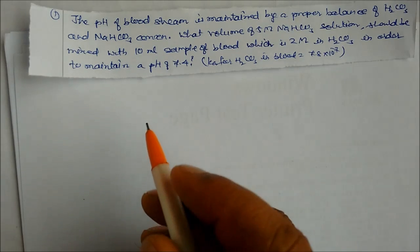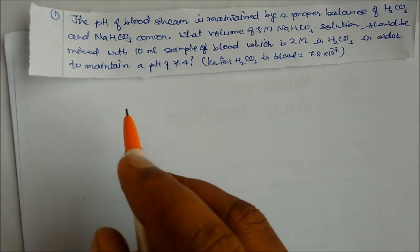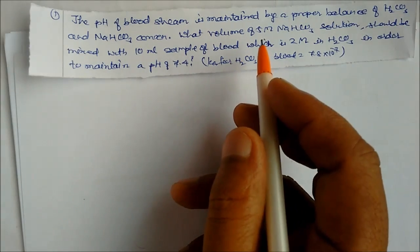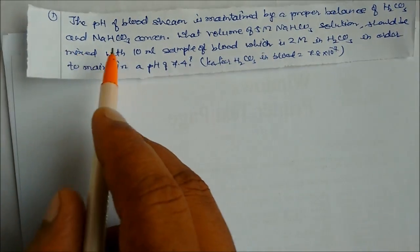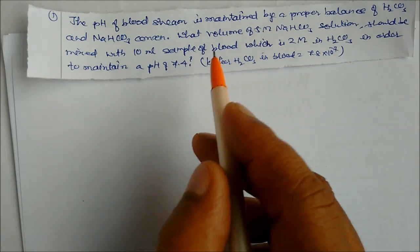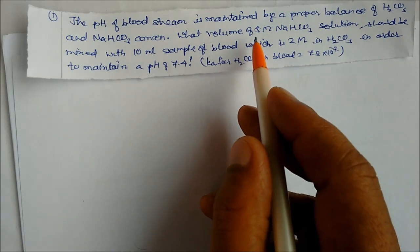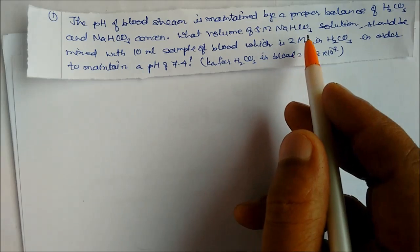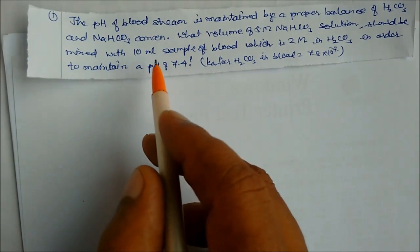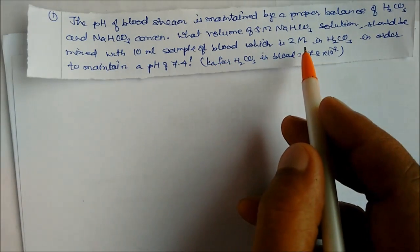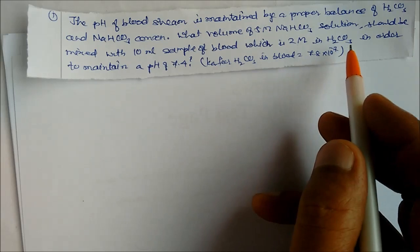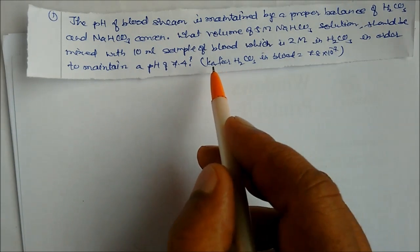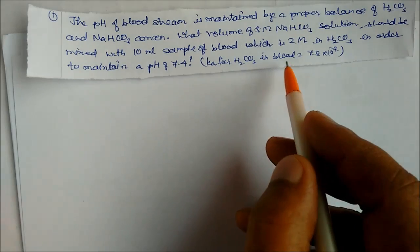Some problems based on the Henderson equation. The pH of blood stream is maintained by a proper balance of H₂CO₃ and sodium bicarbonate concentration. What volume of 5 molarity sodium bicarbonate solution should be mixed with a 10 mL sample of blood which is 2 molar in H₂CO₃ in order to maintain a pH of 7.4? Ka is given for this equilibrium.